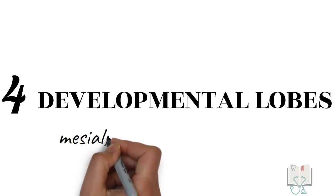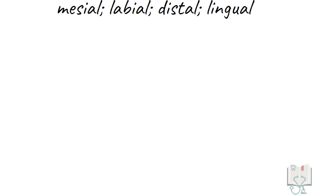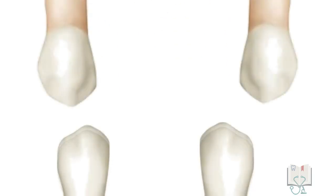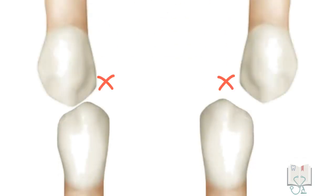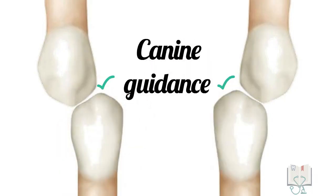The tooth develops from four developmental lobes: mesial, labial, distal and lingual. Together with maxillary canine, it helps in guiding the jaw to close in correct position called canine guidance.